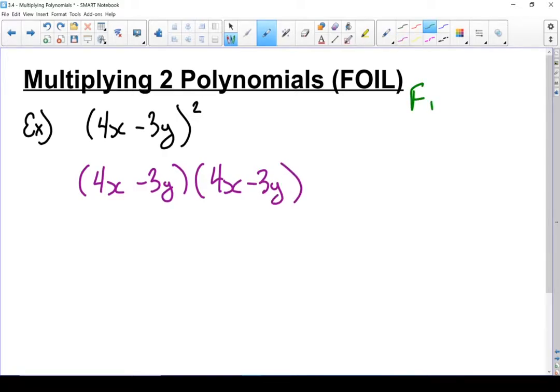For FOIL, the F stands for first. So you multiply the first two terms. O stands for the outside two terms. I is for the inside. And L is for the last two terms.